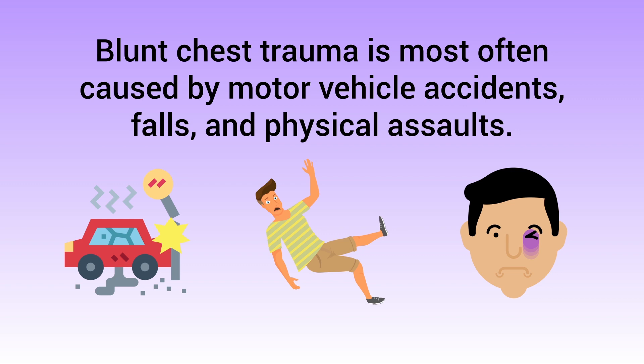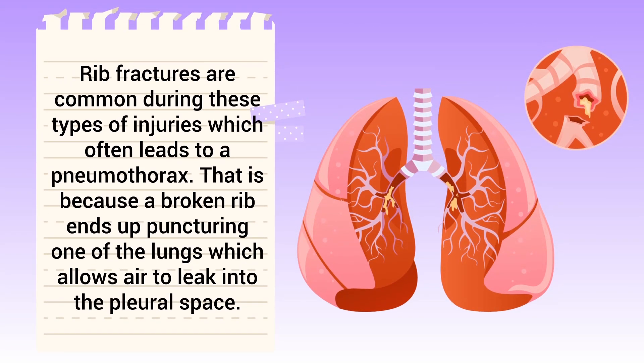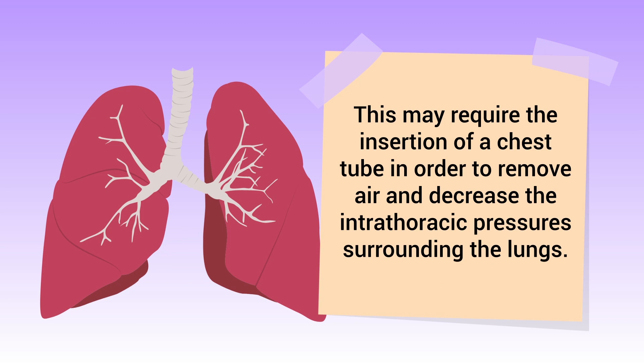Rib fractures are common during these types of injuries, which often leads to a pneumothorax. That is because a broken rib ends up puncturing one of the lungs, which allows air to leak into the pleural space. This may require the insertion of a chest tube in order to remove air and decrease the intrathoracic pressure surrounding the lungs.